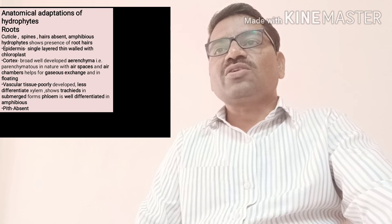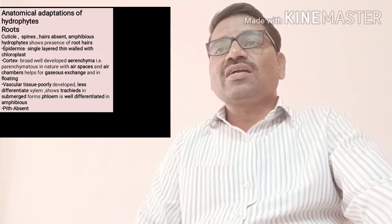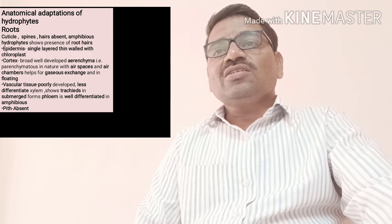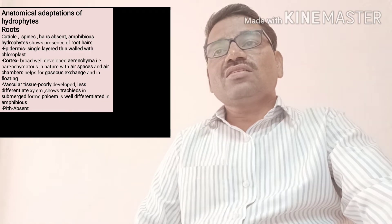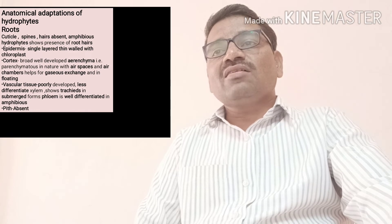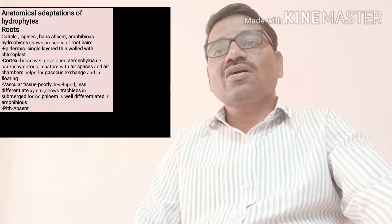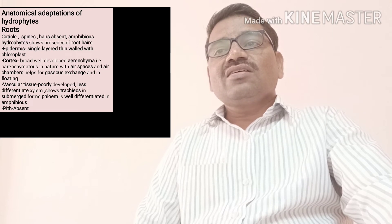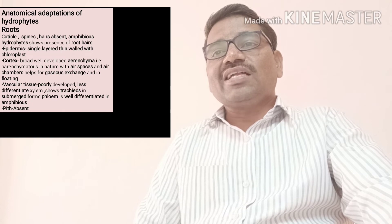Anatomical adaptations of hydrophytes: when you observe the root part and take a transverse section, the cuticle, spines, and hairs are absent. But in amphibious hydrophytes, root hairs are present. The epidermis is a single layer involved with the presence of chloroplasts. Below the epidermis, there is cortex — broad, well developed, and aerenchymatous, meaning parenchymatous in nature with air spaces and air chambers that help for gaseous exchange and flotation.